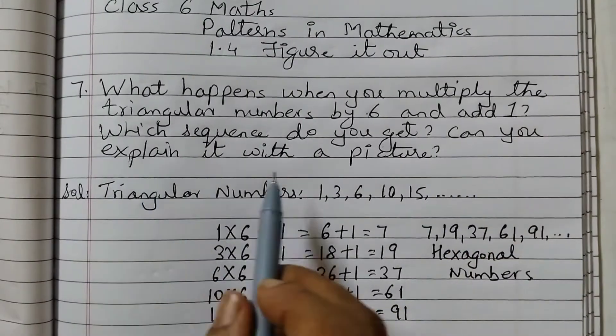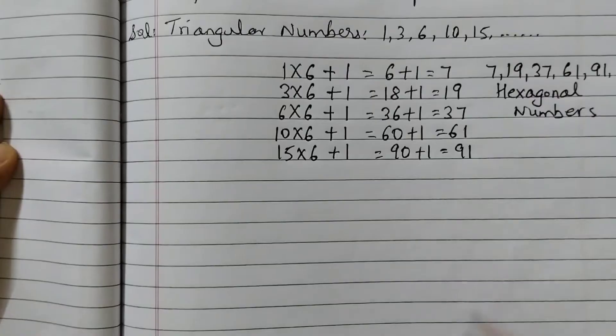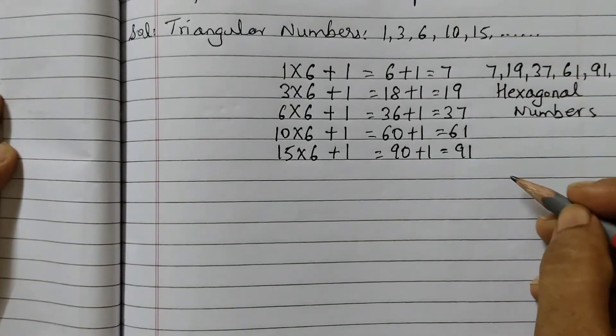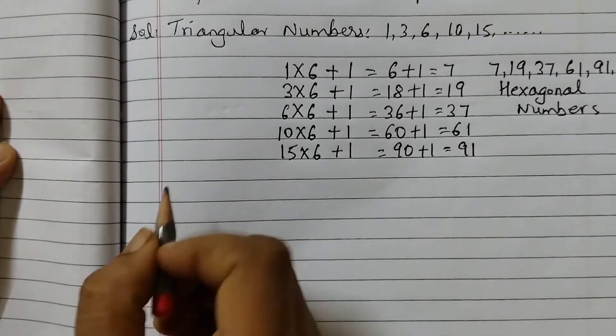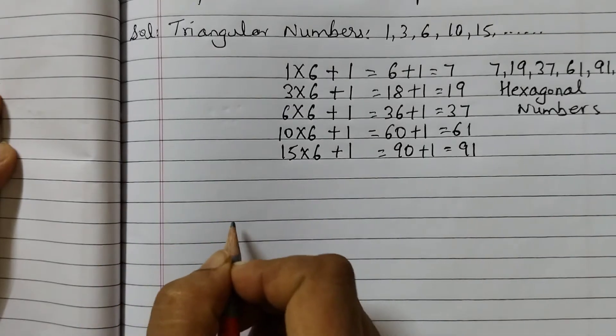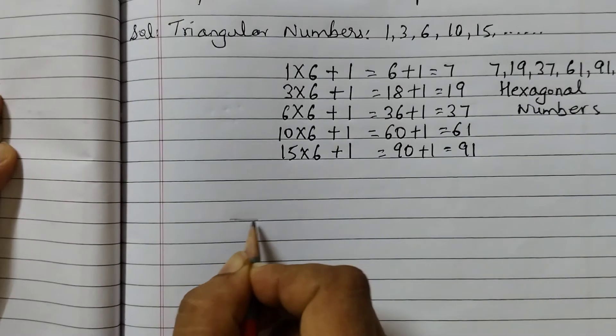Can you explain it with a picture? Yes, we can explain it with a picture. These are hexagonal numbers that means it forms hexagon. Hexagon means a 6 sided figure. You can use a pencil to draw.